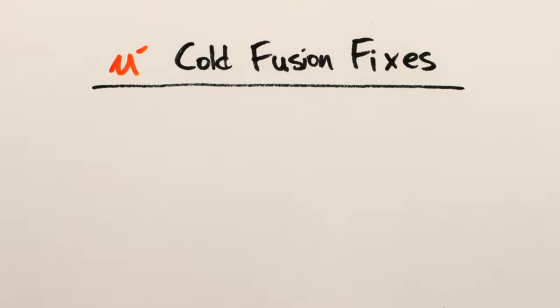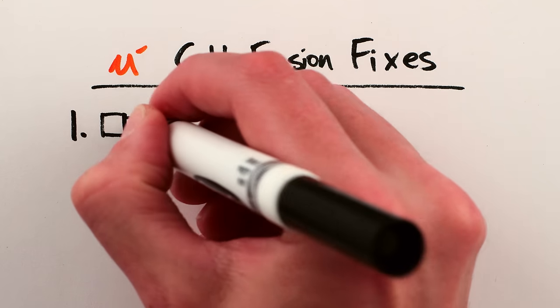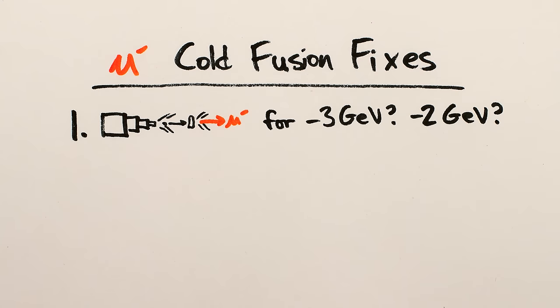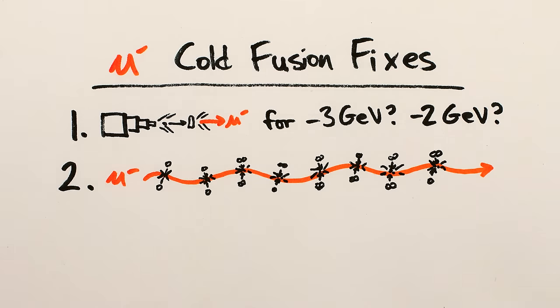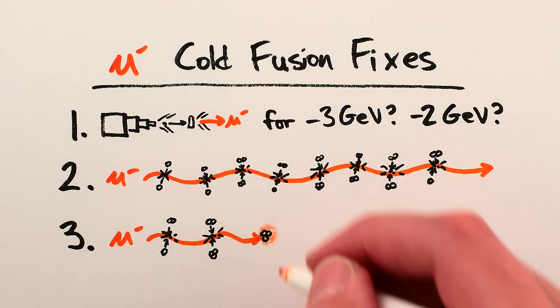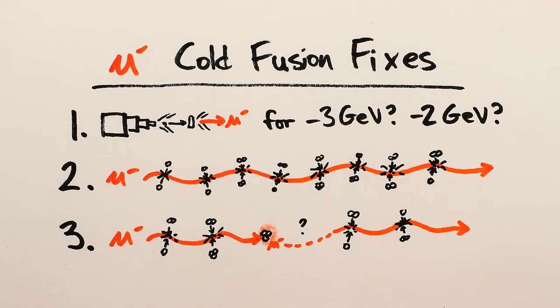Pretty much the only hope for muon facilitated fusion is to figure out how to make muons for less energy, or to figure out how to have less of them stick to the helium nuclei, or how to unstick them once they're stuck. Which are all hard problems limited by the unchangeable physical properties of muons and nuclei, and so we've made quite slow progress in over 70 years of research.